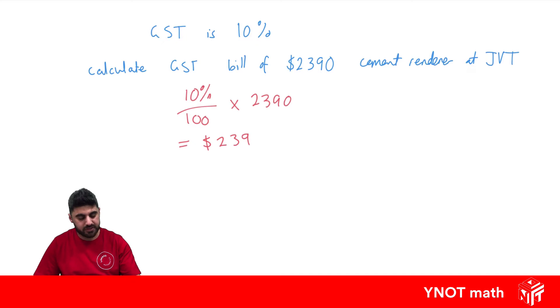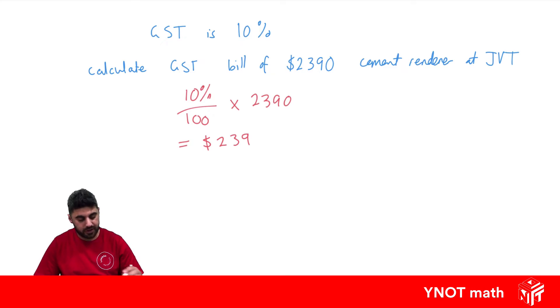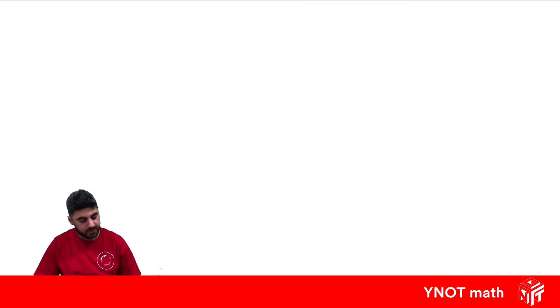So when the person comes to pay this bill, they'll have to pay the $2,390 for the bill plus the $239 for GST. Let's look at another example.